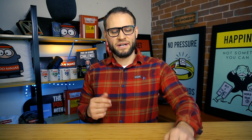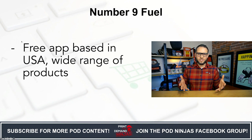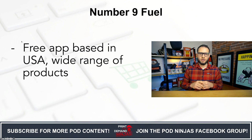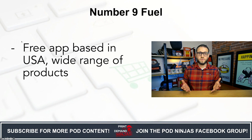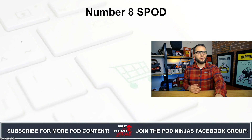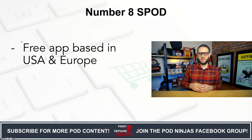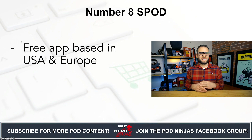Number nine is Fuel — an app based in the United States. It is a free app, meaning you can simply install it on your store without paying a subscription. They have a wide range of products from apparel to drinkware. I have students who use them and have had good experiences. Number eight is Spod — also free, with production facilities in the USA and Europe, so depending on where you're selling, make sure you select the correct shipping method.